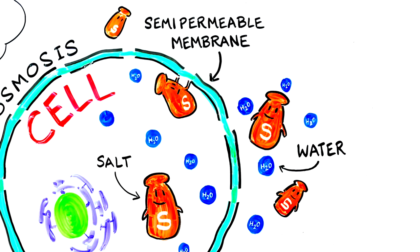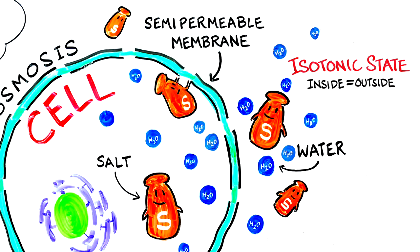Normally, the saltiness of water inside our cells is the same as the saltiness outside our cells. When you drink water, a concentration difference takes place. Water from the outside of your cell moves inside to maintain balance. This is called an isotonic state.